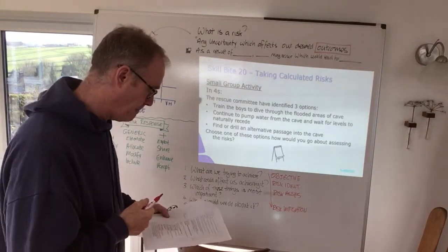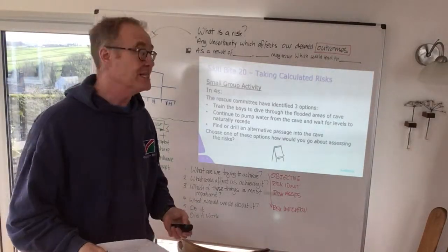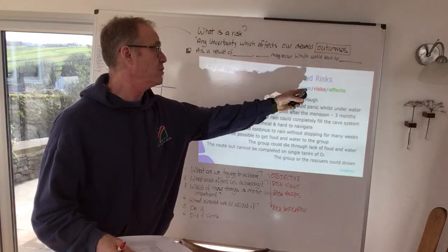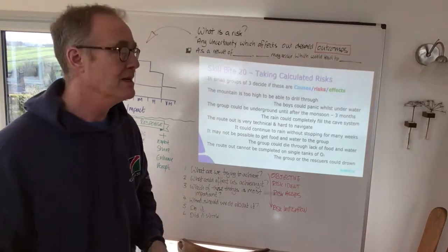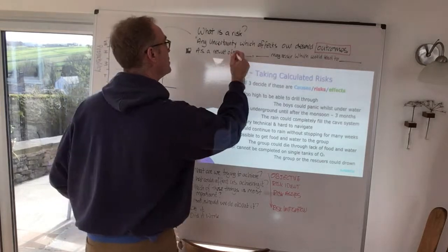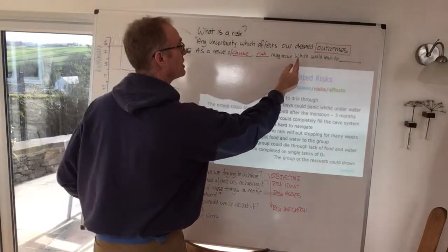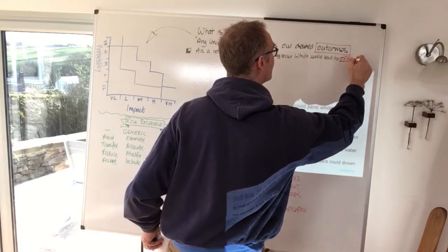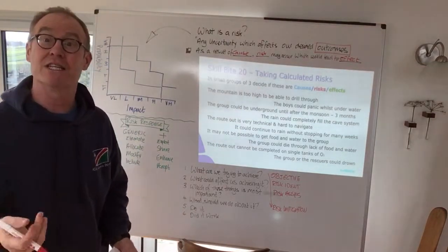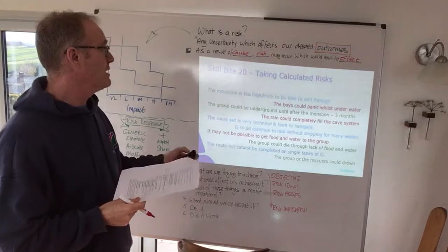Step two is risk identification. Here's a challenge for the group: get them into small groups and ask them — looking at these statements, which are causes, which are risks, and which are effects? We're looking for them to identify the structure: as a result of a cause, a certain risk or unexpected uncertainty may occur, which would lead to an effect. Leave them in small groups to discuss for five or six minutes, then bring everyone back and reveal the next slide showing the blue, red, and green coding.